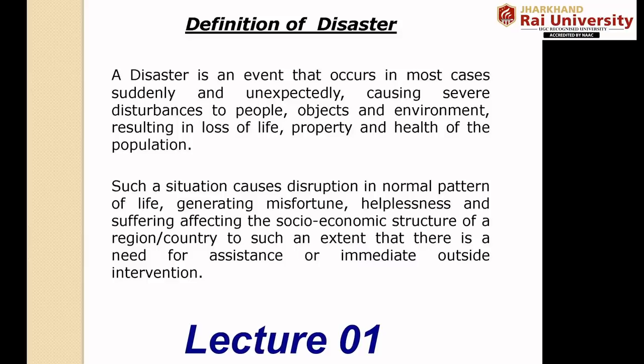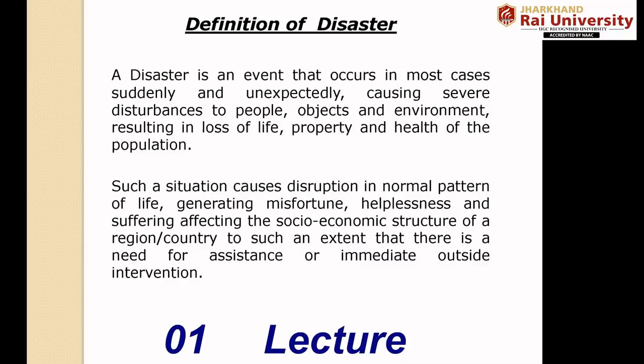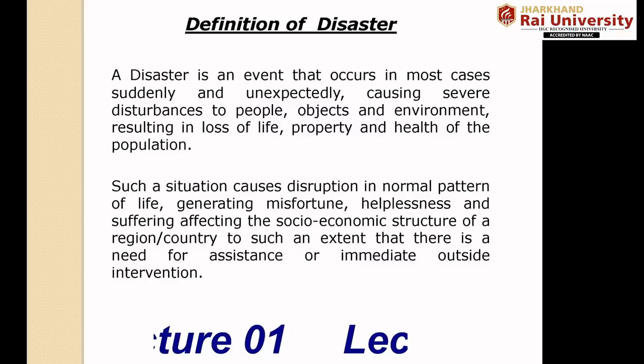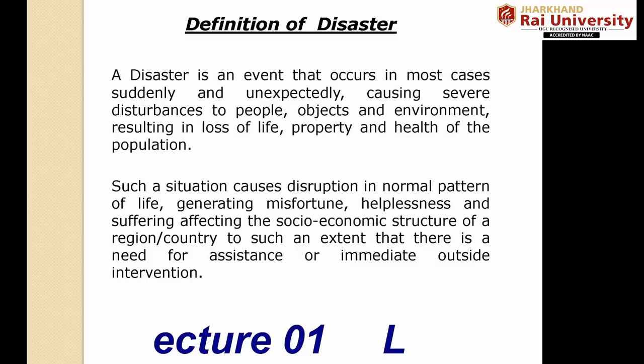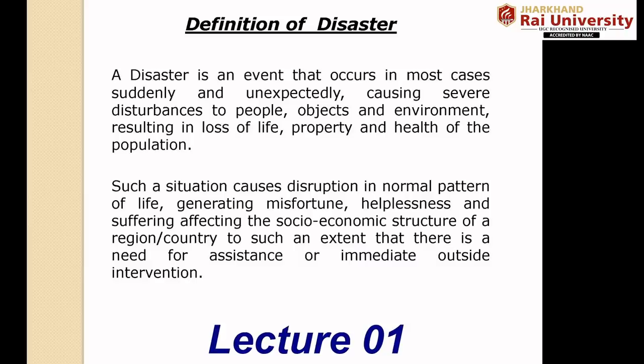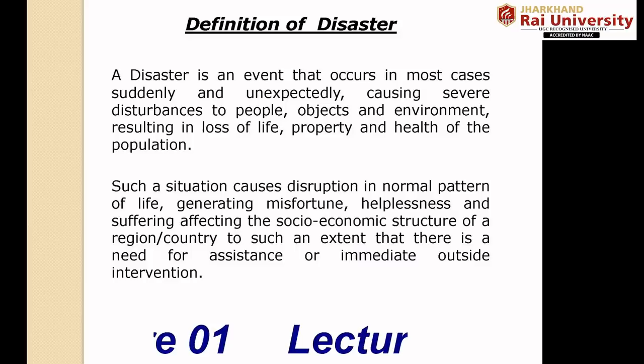From a social viewpoint, we can say an extreme event within the earth system that results in death, injury to humans, and damage or loss of valuable goods is called a disaster. Scientifically, behind every natural disaster that occurs on the earth's surface, there is at least a single or multiple geographical phenomenon or earth system processes, active in a continuous, systematic, and cyclic manner.